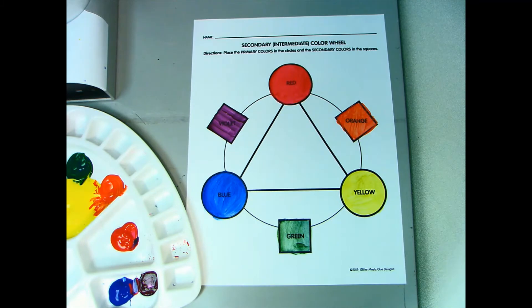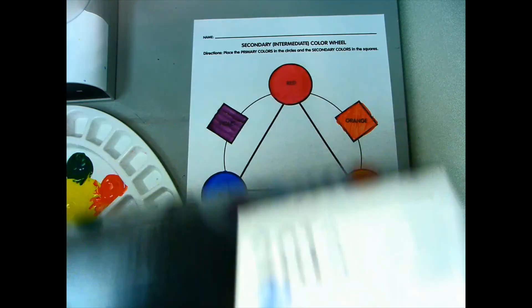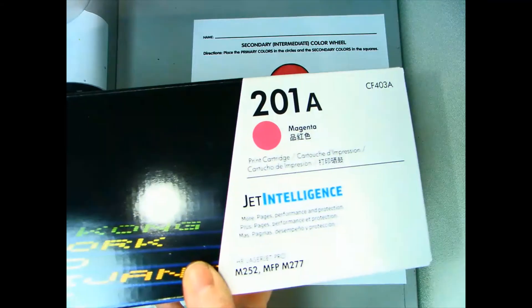Our primary mixing colors are what we use for printer ink. The blue we use is called cyan, and the red we use is called magenta.